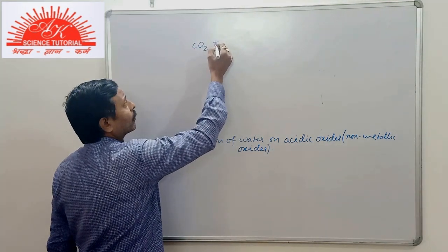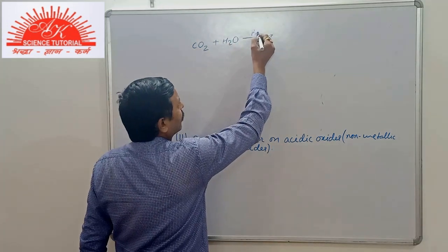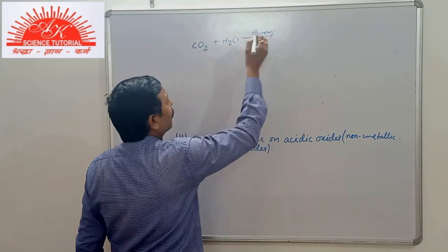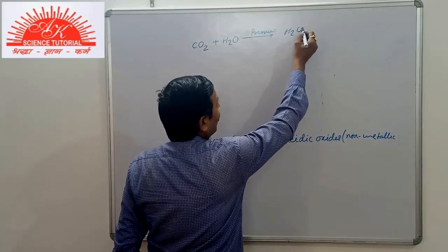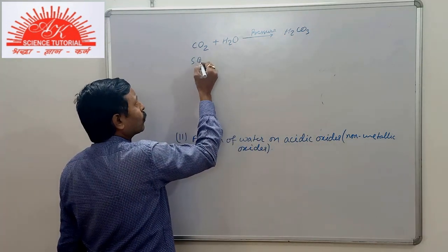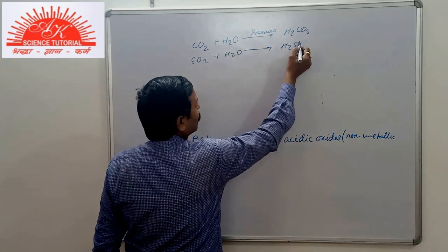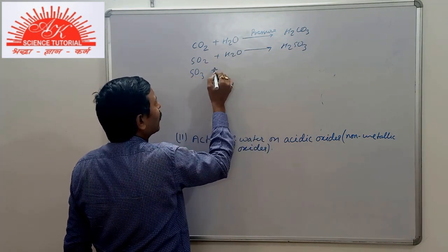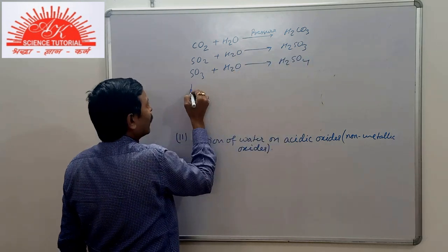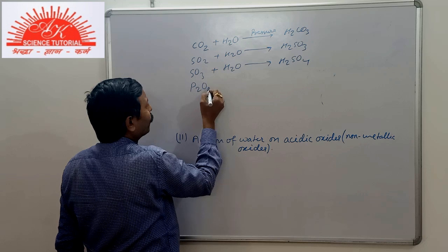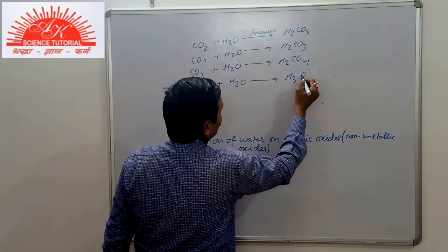Like you see, suppose we have CO2. Now it dissolves in water under high pressure. Carbon dioxide is just primarily soluble. So when we apply pressure, it dissolves to form carbonic acid. SO2 plus H2O gives H2SO3. SO3 plus H2O gives H2SO4. P2O5 plus H2O gives H3PO4.